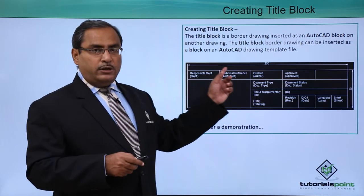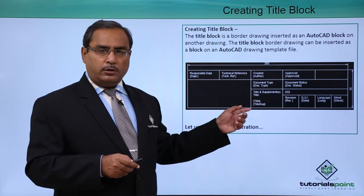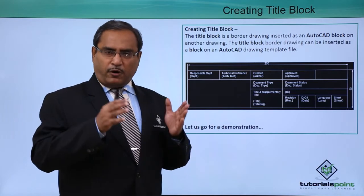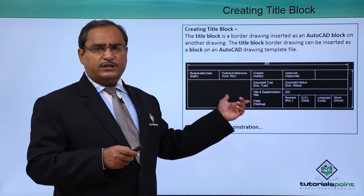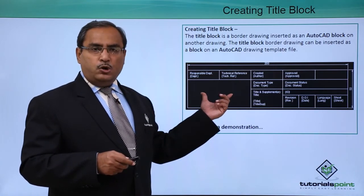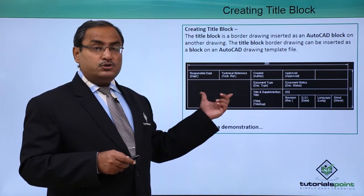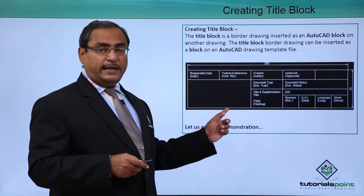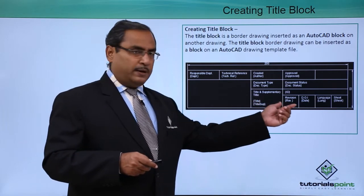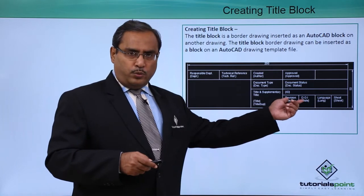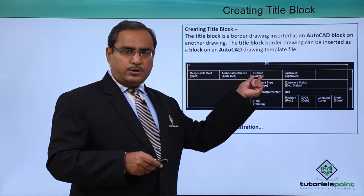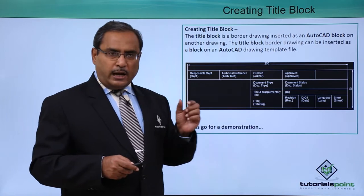For the respective drawing, we are putting this title block. This title block may have different formats; here we have taken this one as a sample. Here you can put the company logo also. That is why this space has been kept blank, and here we are supposed to fill up this title block with the respective data, and those fields are denoted within curly braces.